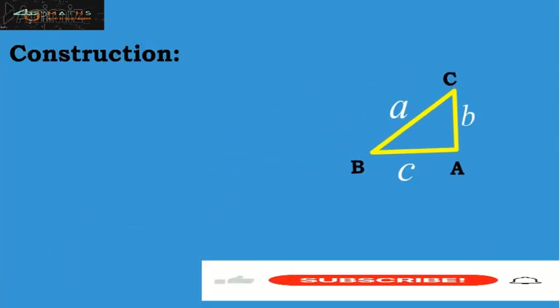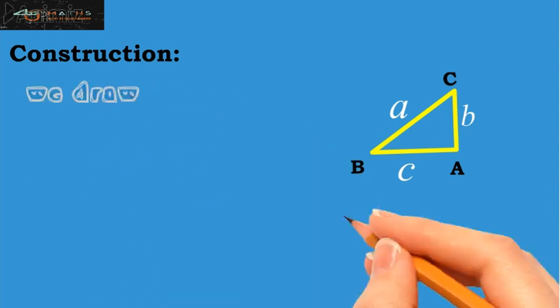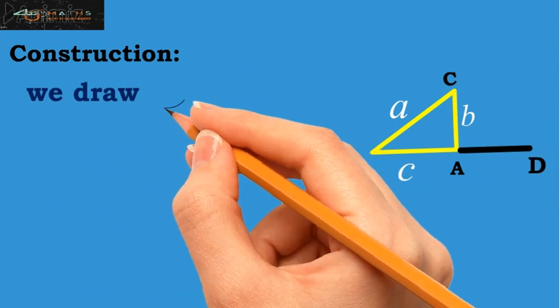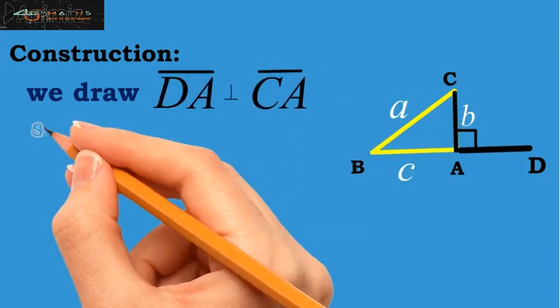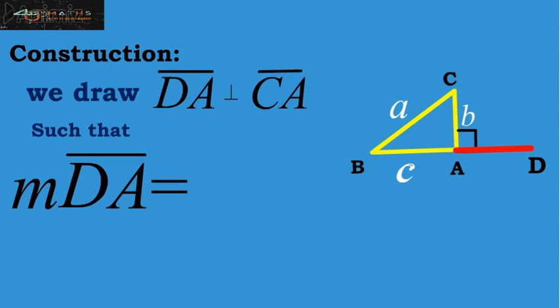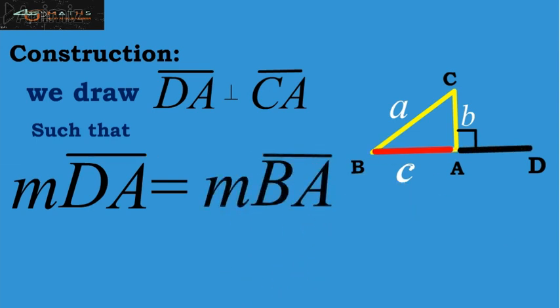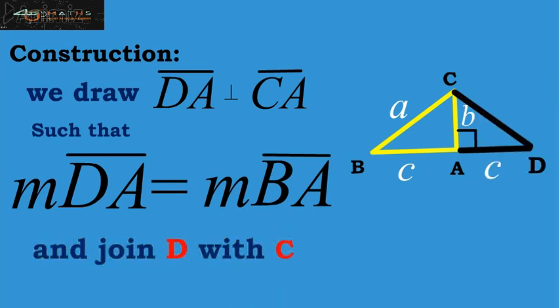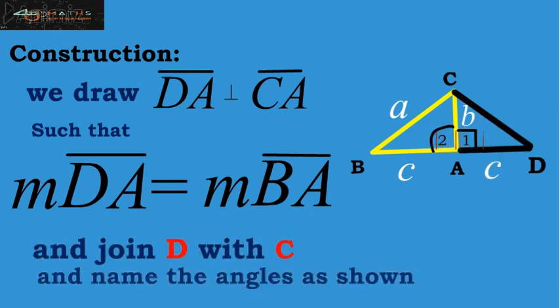Construction. We need little bit construction here. So, we draw BA perpendicular to CA, such that BA is equal to BA and join B with C and name the angles as shown.